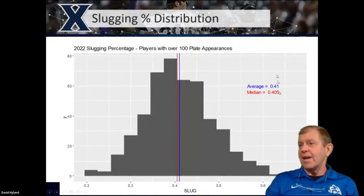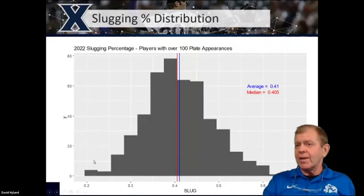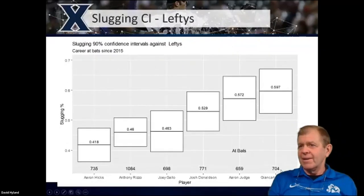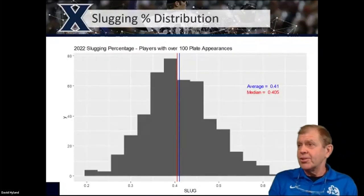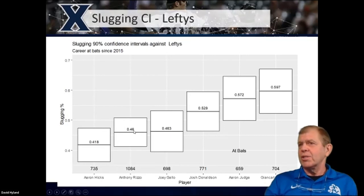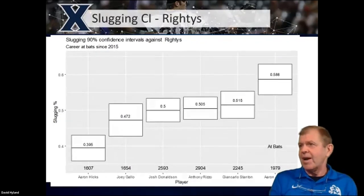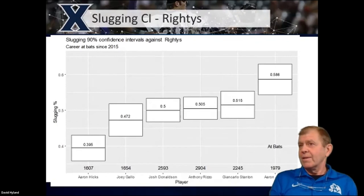We can do confidence intervals and statistical difference tests for proportions, but also for point estimates like slugging percentages or home runs per plate appearance. This is the slugging percentage distribution — I took all players with over 100 plate appearances. The data is a little skewed to the right, with some extreme observations like Aaron Judge. This is each of these guys' career slugging percentage against lefties. John Carlos Stanton looks incredibly good. Against righties, Aaron Judge looks incredibly good as well.